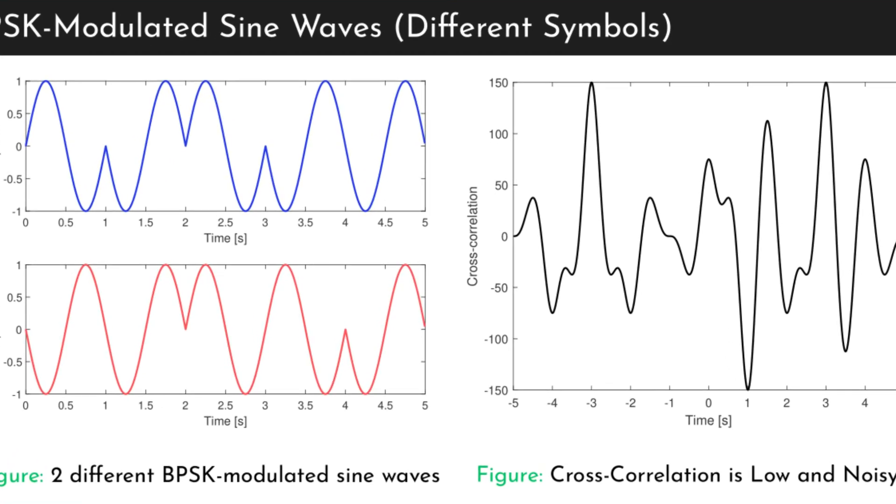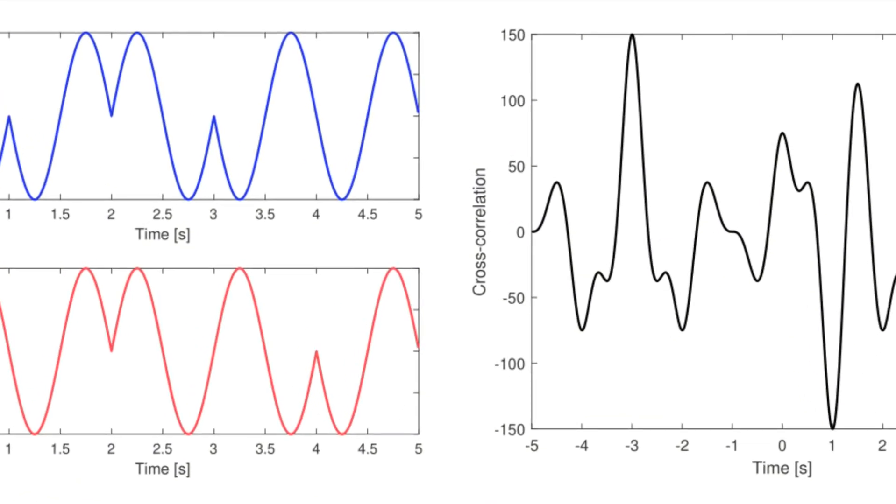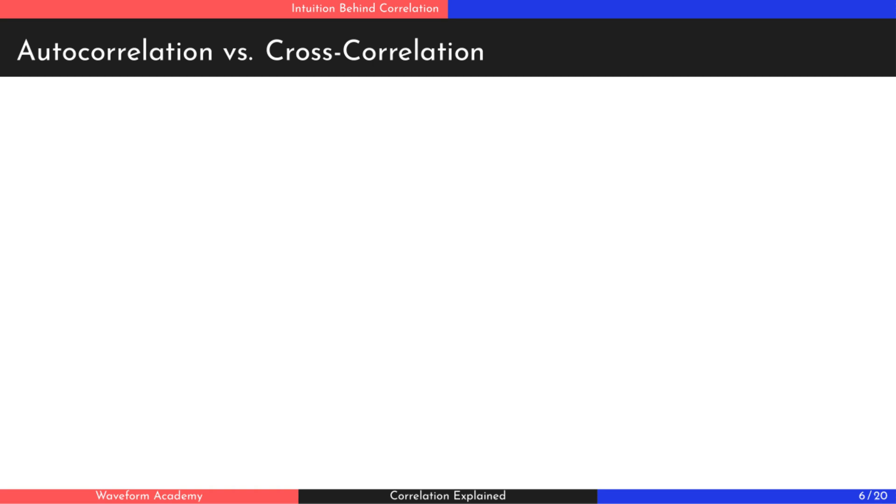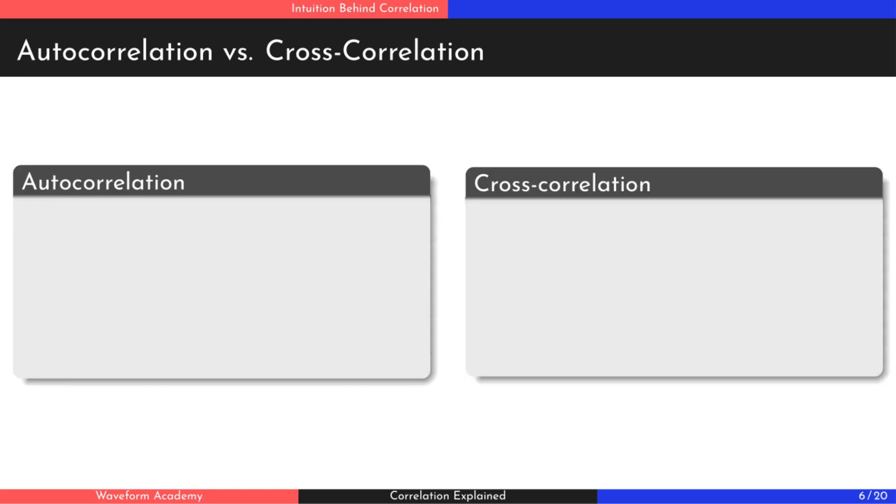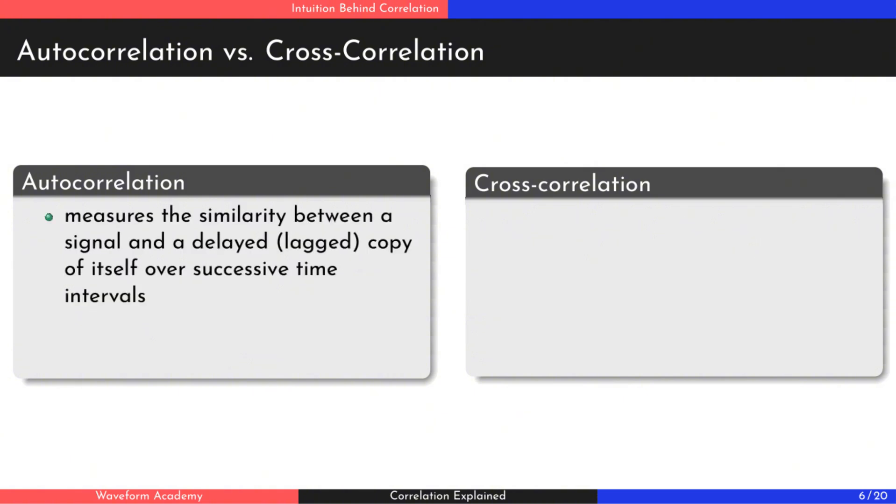Now let's quickly discuss why the y-axis is called cross-correlation. In DSP, we mainly work with two types of correlation, auto-correlation and cross-correlation. Auto-correlation is the correlation of a signal with its own delayed copy. It's useful for tasks like noise analysis and pattern recognition.